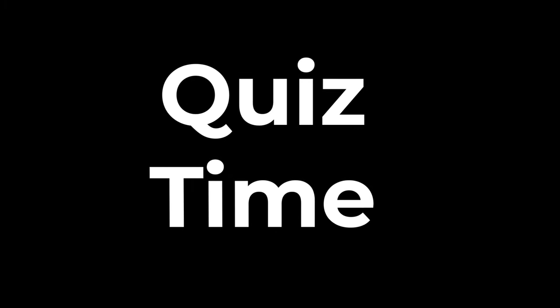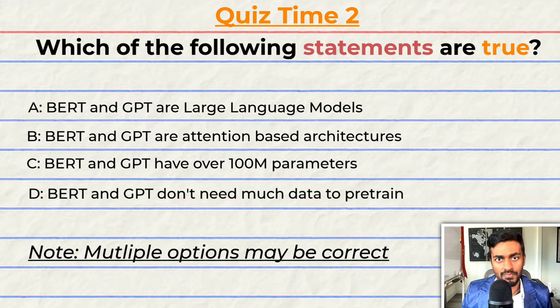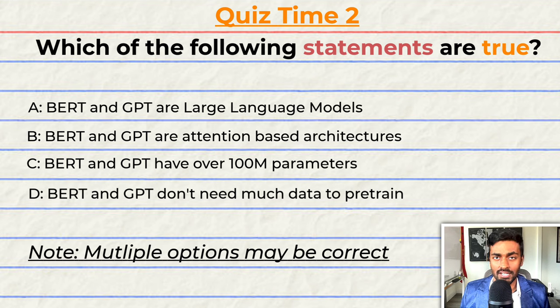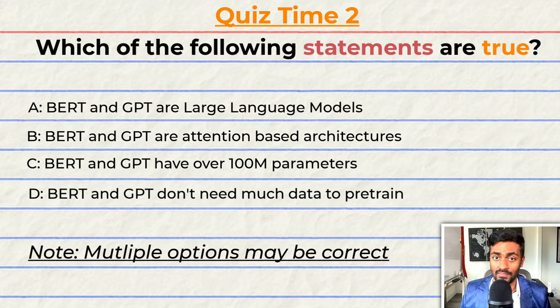Quiz time! It's that time of video again. Have you been paying attention? Which of the following statements are true? A: BERT and GPT are large language models. B: BERT and GPT are attention-based architectures. C: BERT and GPT have over 100 million parameters. Or D: BERT and GPT don't need much data to pre-train. Note that more than one statement here can be correct. Comment your answer down below and let's have a discussion.